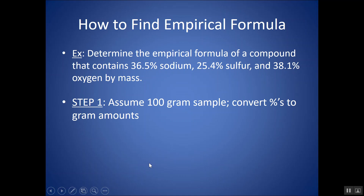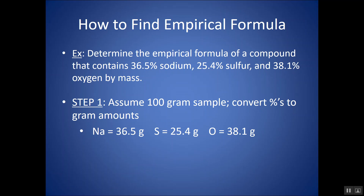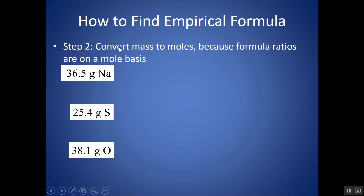Your first step is to assume you have a 100-gram sample so that you can change the percents to grams. Assuming 100 grams is easiest — if I assume a 100-gram sample, then 36.5 grams would be sodium, 25.4 grams would be sulfur, and 38.1 grams would be oxygen. Step two is to convert the mass of each element separately to moles using the periodic table and atomic masses. Why convert to moles? Because the subscripts in the formula represent mole ratios, not mass ratios. Whenever I'm trying to find subscripts, I've got to mole it out.